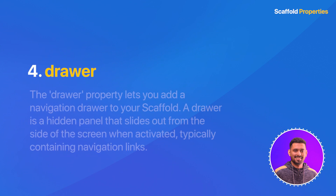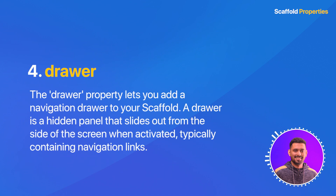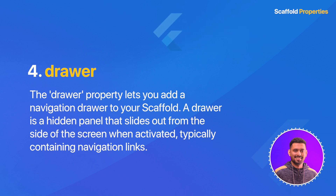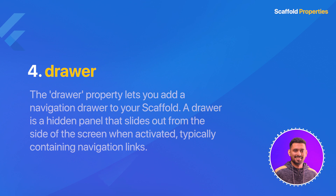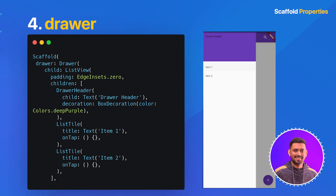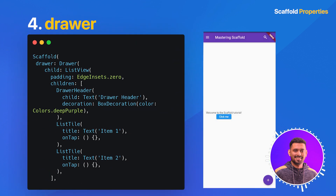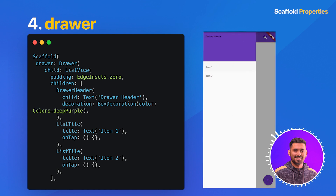Number four: drawer. The drawer property lets you add a navigation drawer to your scaffold. The drawer is a hidden panel that slides out from the side of the screen when activated, typically containing navigation links. Here, we have added a drawer with a header and two navigation items.